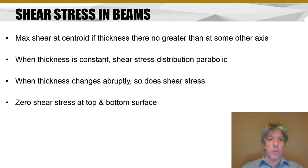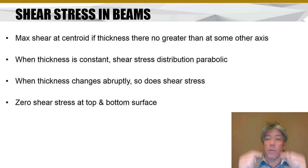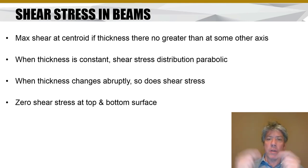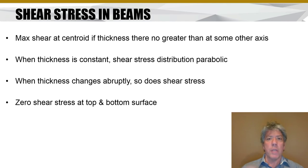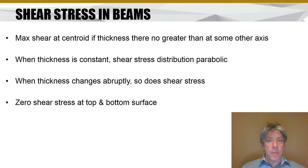The maximum shear is at the centroid of the overall shape if the thickness there is no greater than at some other axis. For an I-beam, the centroid is right in the center, and at that point the thickness is the width of the web. As you move farther out and approach the flange, the thickness becomes the width of the flange — a much larger T. Near the center of that I-beam, the thickness is smallest, and so the maximum shear stress typically occurs where the thickness is smallest and at the center, because VQ over IT gives the largest tau when Q is largest and T is smallest.